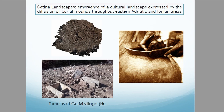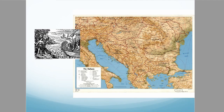The Cetina phenomenon is also characterized by the emergence of different cultural landscapes, expressed physically by the diffusion of burial mounds throughout the Eastern Adriatic and Ionian areas. This can be observed in the northernmost and southernmost peripheries of the Cetina phenomenon — in northern Italy and particularly in Greece — where the diffusion of tumuli occurred at the same time that the diffusion of Cetina features reached its peak. The notion that prehistoric social landscapes were divided into territorial blocks occupied by distinctive archaeological cultures is recurrent in archaeology.